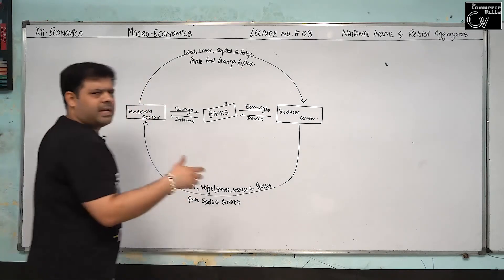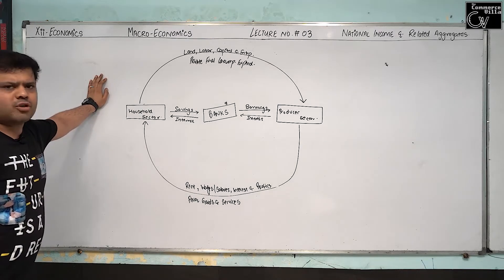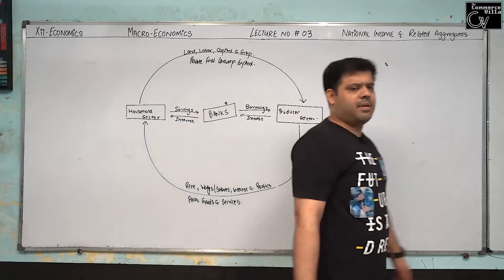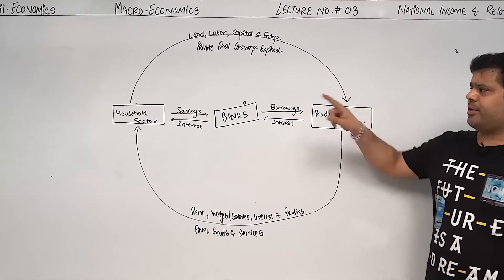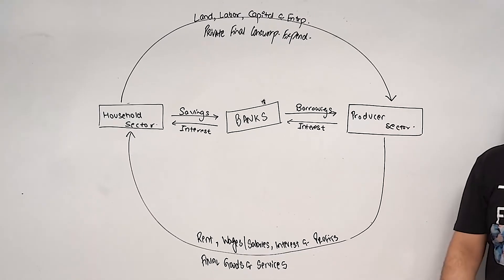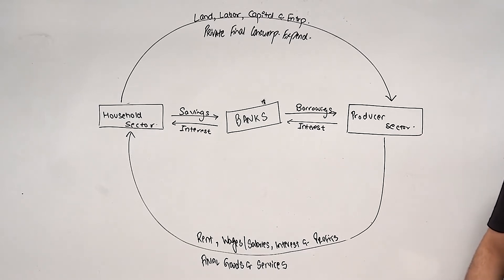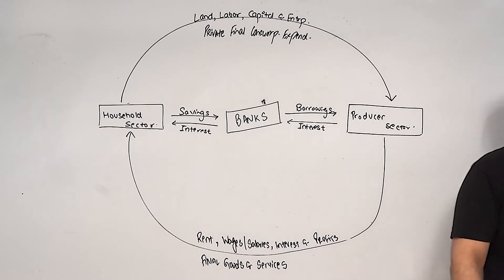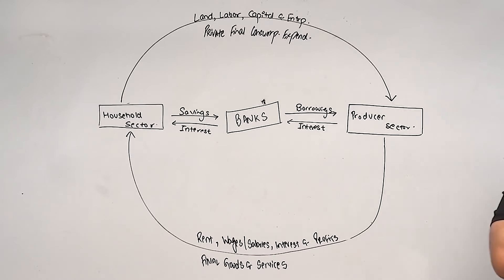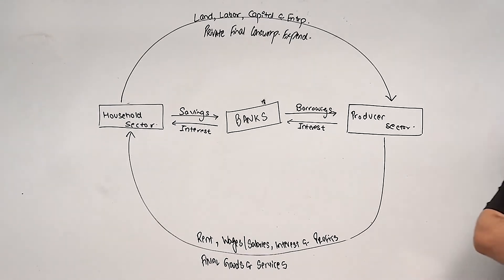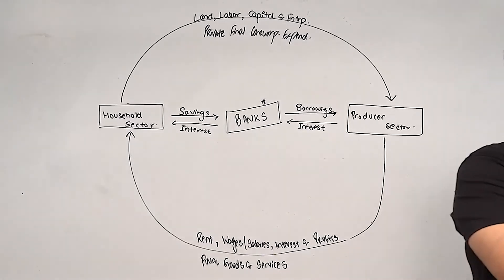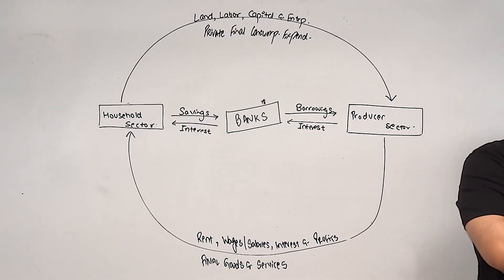Draw this on the space given below. I am giving you one complete minute to draw this. Household to bank, bank to producer, household to producer, and producer to household. You already know how to draw it from page number five.